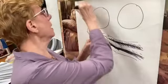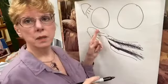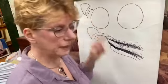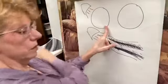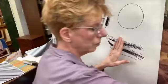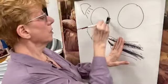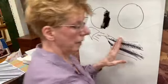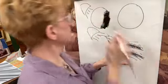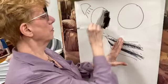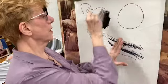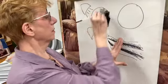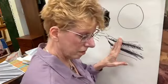We have an orb. We have a light source. We know this has got to be light, this has got to be dark. We're going to have some shadow on this side, and then as we get to the other side, it's going to become lighter and lighter and lighter.